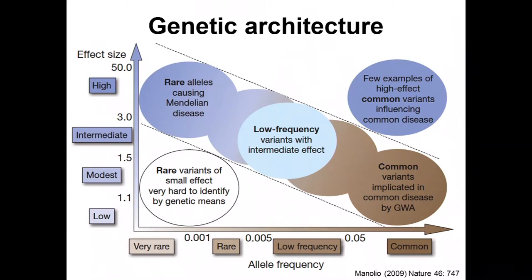The strategies by which one may find variants are influenced by the frequency of those variants and their effect size. Common variants are typically defined as having frequencies of five percent or greater in a population, down to rare variants specific to an individual or family. The effect size on the y-axis indicates how causal a variant is with respect to disease. Genome-wide association studies have largely fallen into the area of common variants, many of which have relatively modest or low individual effects.